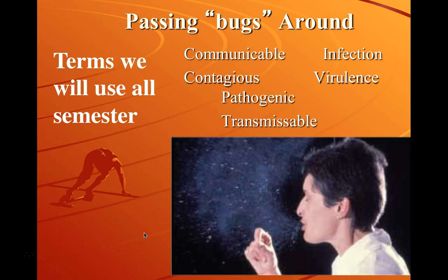Virulence addresses how sick a pathogen will make you — will it simply give you a headache and upset stomach, or can it possibly kill you within a week to ten days? Transmissible simply means you can transfer the infectious organism from a place to a person. It could be a doorknob, tabletop, soiled dressings from a wound, or even the air. So transmissible means you can transfer a microorganism to a person through a variety of means.